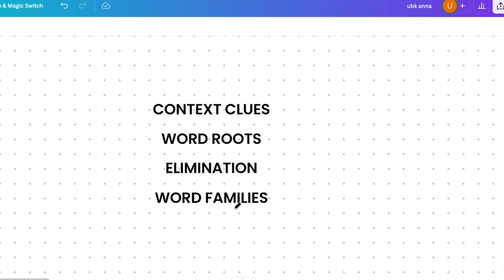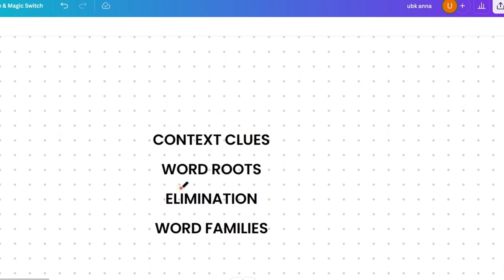The second tip is word roots: knowing the roots of words helps you understand unfamiliar words. For instance, 'brief' comes from the Latin word 'brevis', meaning short in duration. Similarly, knowing roots like 'audi' helps you understand words like audacity, audience, and audio. Read about word roots — it will be very helpful.